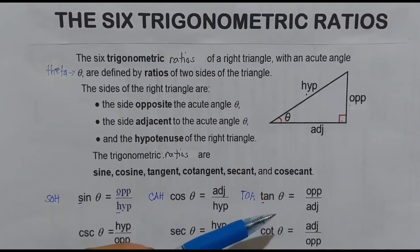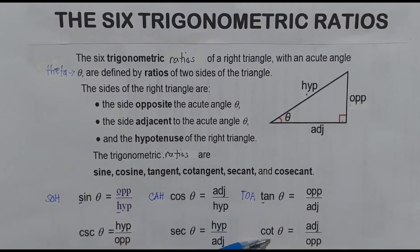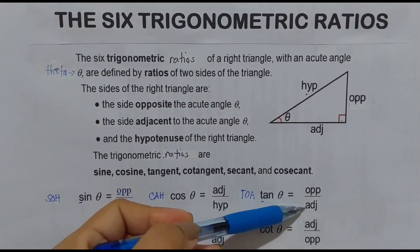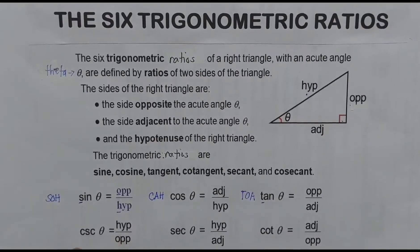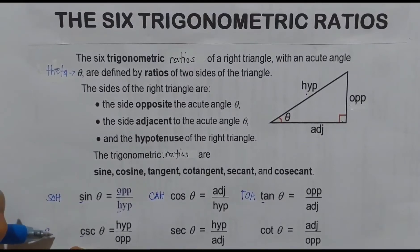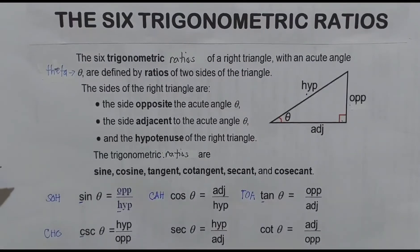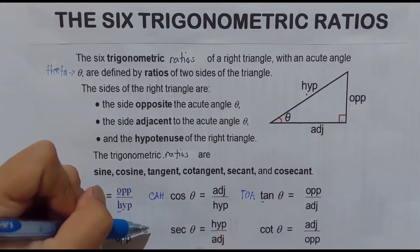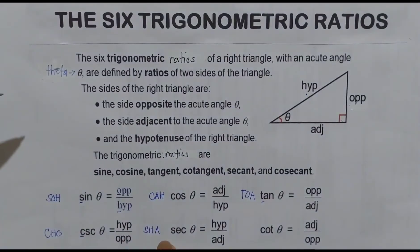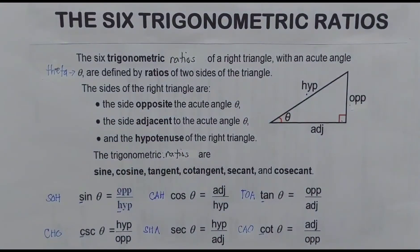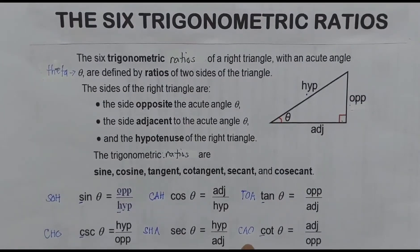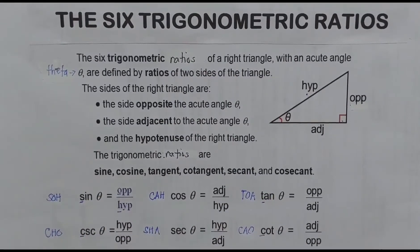For tangent theta, its reciprocal or inverse is cotangent theta. So if tangent is opposite over adjacent, then cotangent theta equals adjacent over opposite. A mnemonic for these reciprocal ratios is CHO-SHA-CAO: CHO means cosecant equals hypotenuse over opposite, SHA means secant equals hypotenuse over adjacent, and CAO means cotangent equals adjacent over opposite. So for the basic three: SOH-CAH-TOA, and for the inverse: CHO-SHA-CAO.